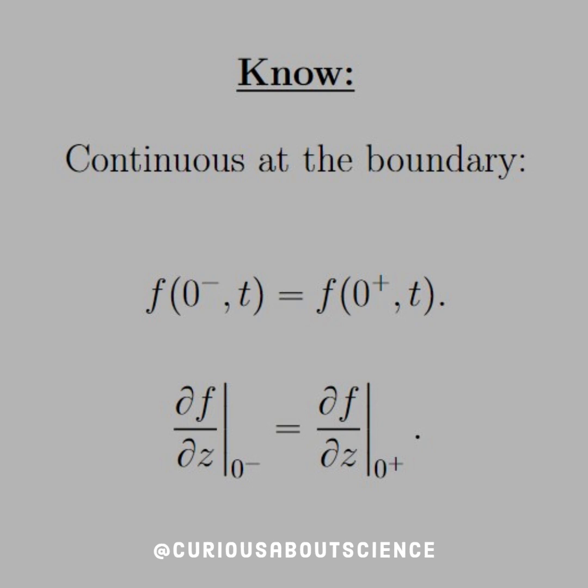So if we set the boundary at zero, to the left of zero we need to be equal to the right of zero, the function values. And the derivatives to the left and the derivatives immediately to the right need to be the same as well.